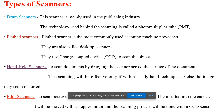Drum scanners are mainly used in the publishing industry — when publishing any book or multiple pages. The technology used behind this scanning is called Photo Multiplier Tube (PMT).